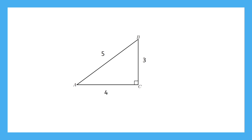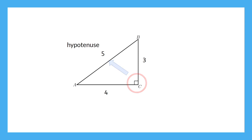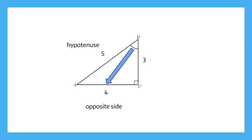Let's start by identifying the hypotenuse of a given triangle. We have this symbol at a vertex of the triangle signifying that this is a right angle. The hypotenuse is always across from the right angle. How we label the adjacent and opposite sides of the triangle depend on which acute angle we're working with. Let's start by using angle B as our reference angle. The opposite side to angle B is the side that's all the way across from it and doesn't touch the angle itself.